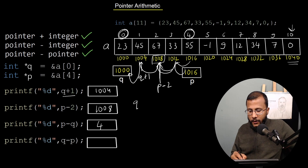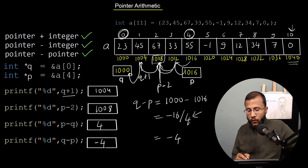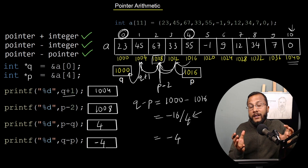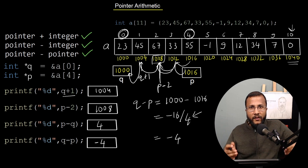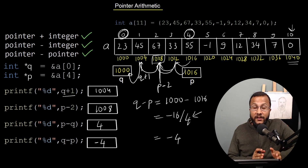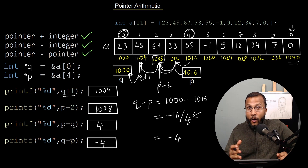Q minus P is 1000 − 1016 = −16, divided by 4 = −4. So P minus Q is 4 and Q minus P is −4. Therefore, the three valid pointer arithmetic operations are: pointer plus integer, pointer minus integer, and pointer minus pointer. These make the most sense when dealing with arrays. Any other operator used with pointer variables will give you an error.